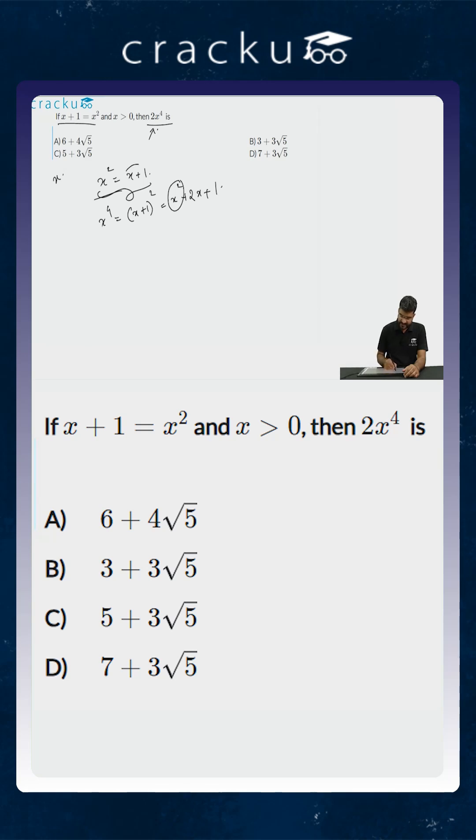But we know that x squared is already equal to x plus 1. So this is equal to x plus 1 plus 2x plus 1. So this is equal to 3x plus 2.